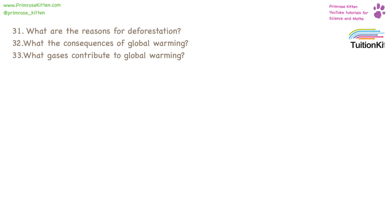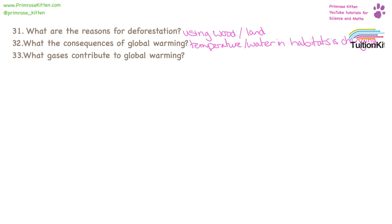There are lots of reasons for deforestation — this could be that people want to use the wood from the trees, or they want to use the land for something. The consequences of global warming or climate change is that places are changing temperature, the amount of rain falling is changing, and the amount of snow is changing. Lots of gases contribute to global warming — carbon dioxide, water, and methane being the main ones.